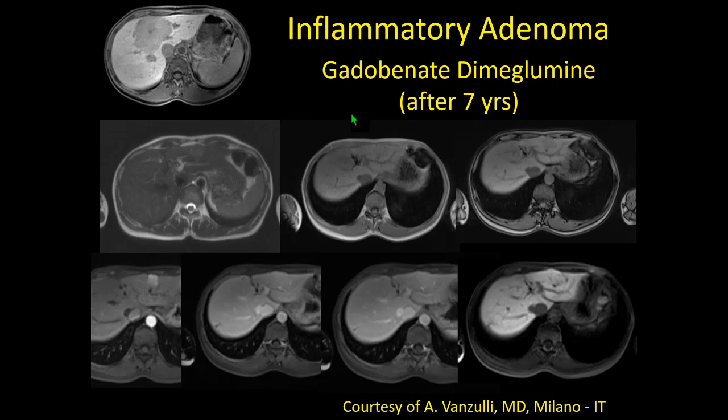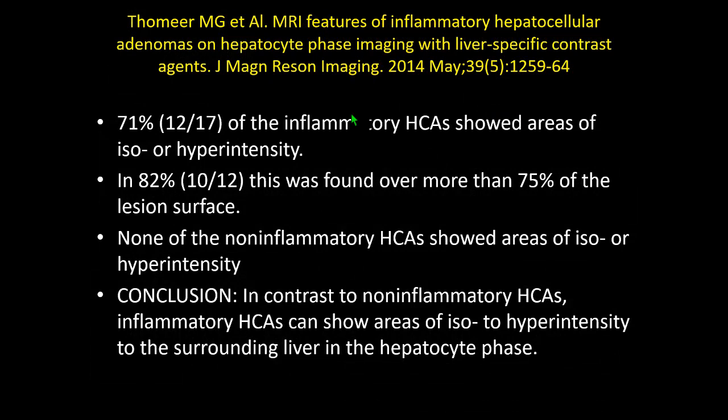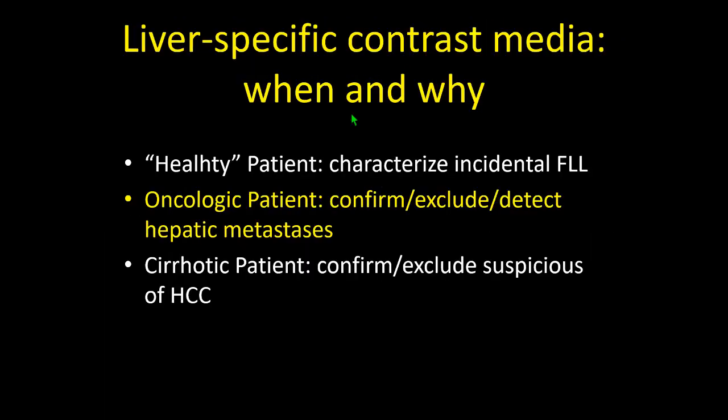The exception is inflammatory adenoma. A patient had a large adenoma seven years prior, unable to take up contrast — typical behavior of inflammatory adenoma. Seven years later, a new lesion appeared: hypervascular, no washout, with uptake — appearing as FNH. But biopsy confirmed inflammatory adenoma, because this subtype was previously classified before 2005 as telangiectatic FNH. It is a monoclonal — therefore tumoral — lesion that can express OATP8.